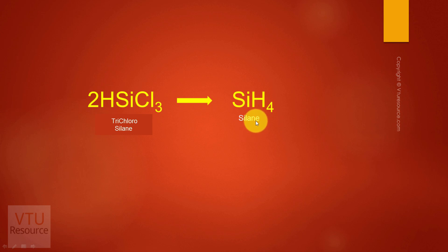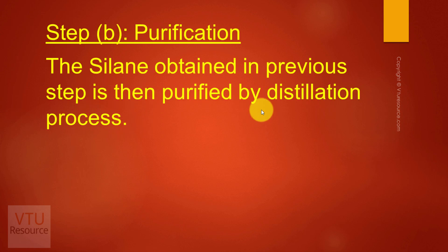Silane, which contains silicon and hydrogen, is then purified in the second step. The silane obtained in the previous step is purified by the process of distillation. When silane is distilled, all the impurities remain behind and only the silane vaporizes.